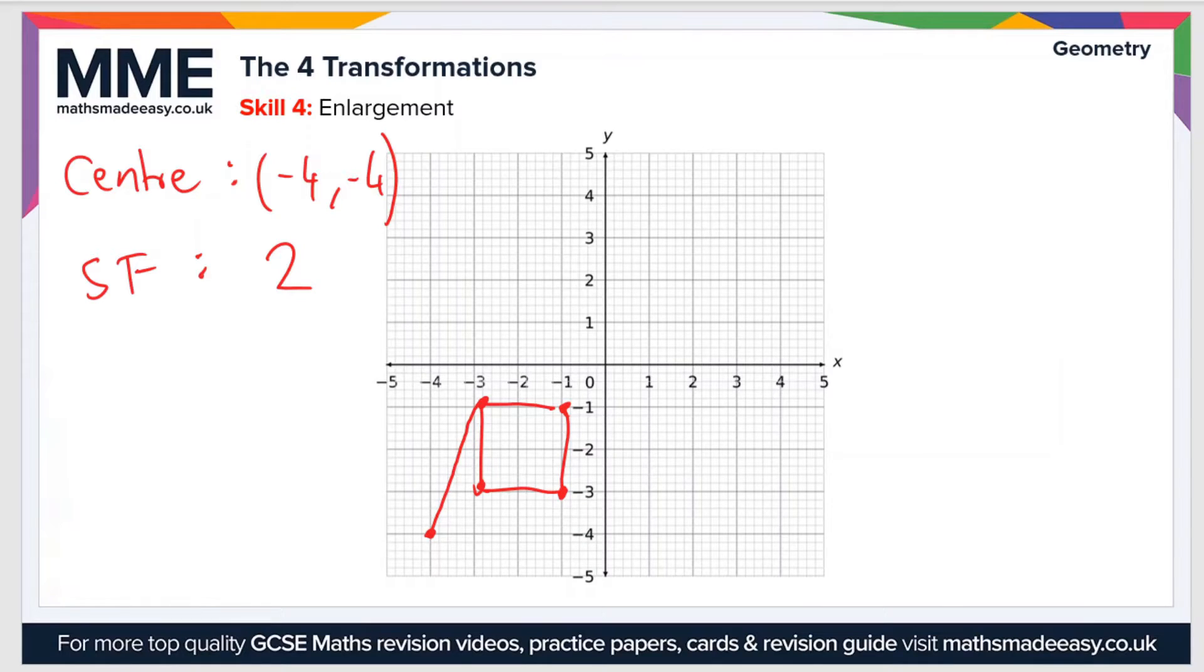...is we'll track how far we've traveled in each direction. We've gone one across and three up. If we do the same again, so if we extend that line going one across and three up, this shows us where the point will now be.